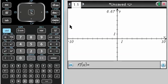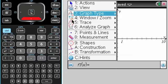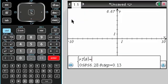I just want to make sure you know how to use your calculator to graph in polar. I'm in a graphing page, and I'm going to press Menu, Graph Type, go to Polar.